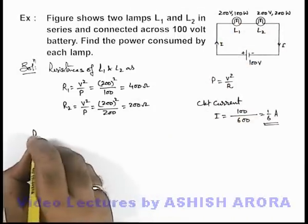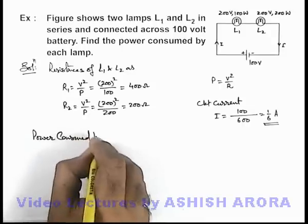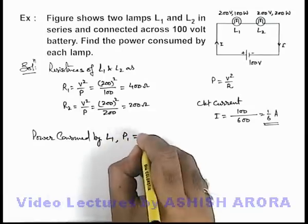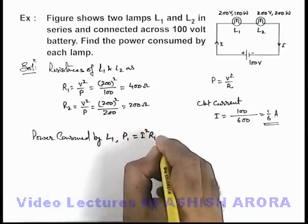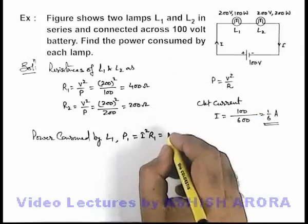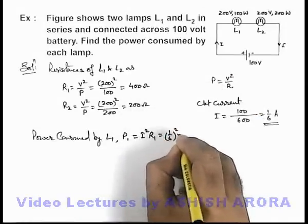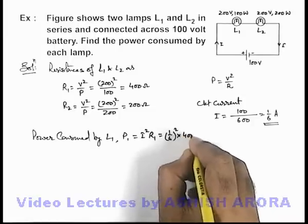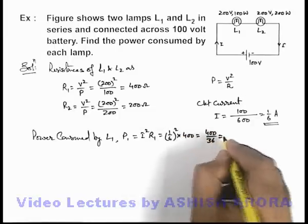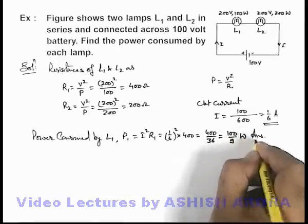So we can directly calculate now the power consumed by lamp L1. This P1 can be written as I squared R1, that is the heat dissipated in a resistance, or it can be written as power consumed by the lamp. So this will be 1 by 6 whole squared multiplied by 400. So this will be 400 by 36. On simplifying, we'll get 100 by 9 watt. That'll be one answer to this problem.